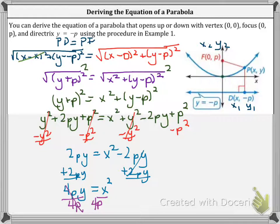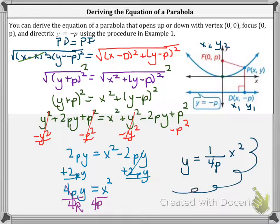Now our final equation is Y equals 1 over 4P and then X squared. This is the formula that we're going to use.